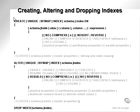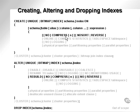Let's look at creating an index. We can create an index which is unique or a bitmap on a certain schema, on a certain set of columns, where we specify schema, table or alias, column, et cetera, or expression. We can compress the index, and we can no-sort and reverse.